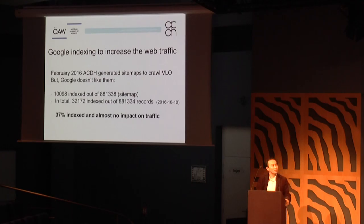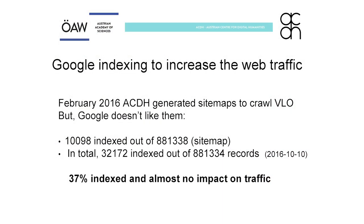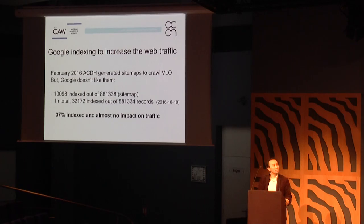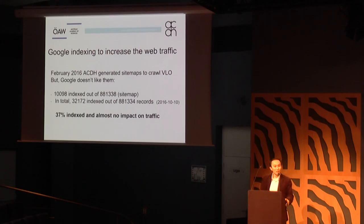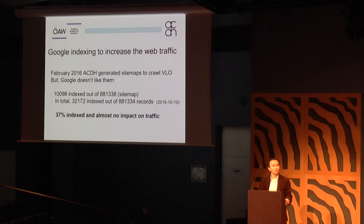Going back to Google indexing — in February this year we sent indexing information to Google, but apparently we have some technical issues. Somehow the Google indexer didn't find our content attractive, and as a result only 37% is indexed. That is one of the reasons why we didn't see a big impact on traffic. From my previous experience in the archives, I witnessed about 400 to 500% rise per year when Google indexing is complete. The impact is quite big when Google is involved, and we have to think about the remedy for this issue.